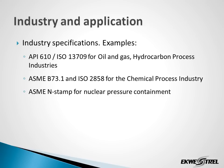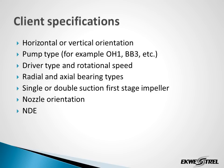Industry and application specifications play an important role. These are just a few examples of the many industry-specific types of specifications: API 610 for the hydrocarbon industries, ASME B73.1 for the chemical process industry, and so on. Client specifications also play an important role, whether the client wants a horizontal or vertical orientation, particular pump type, driver type, bearing arrangement, type of first stage impeller, nozzle orientation, and any non-destructive examination.